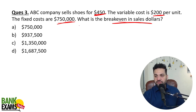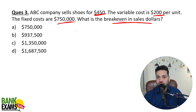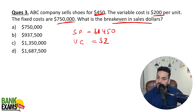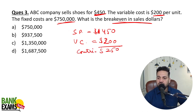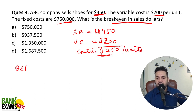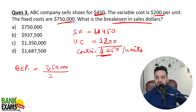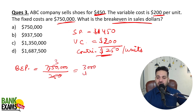ABC company sells shoes for 450 dollars and variable cost is 200 dollars per unit. Let's calculate the contribution: selling price is 450 dollars minus variable cost of 200 dollars — contribution is 250 dollars per unit. To calculate the break-even point: fixed cost of 7 lakh 50 thousand divided by contribution of 250 dollars per unit gives 3,000 units as your break-even point.